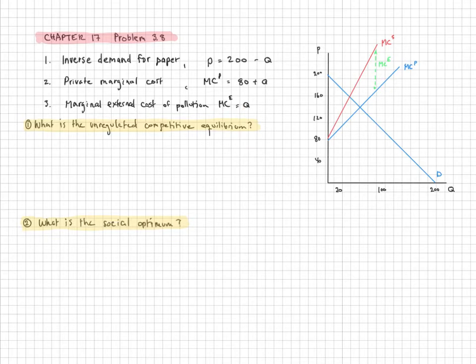The first question is, what is the unregulated competitive equilibrium? That is, if we don't take into account the marginal external cost, what would the equilibrium be? Well, it's a competitive world, so equilibrium is going to be where marginal cost equals P. So we'll have 80 plus Q equals 200 minus Q, or 2Q equals 120, Q equals 60. So that's going to be the equilibrium quantity.